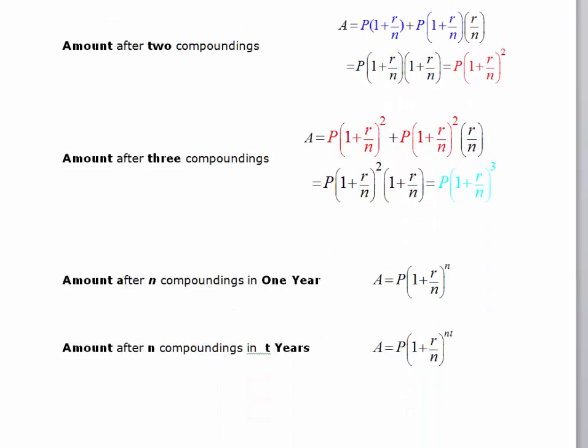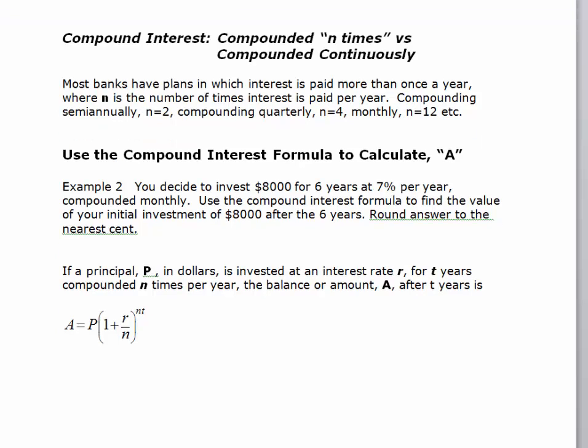We're going to skip over this for now, and just jump right into using the formula for compounded interest. And so it says here that most banks have plans in which interest is paid more than once a year, and N is the number of times interest is paid per year. So if you compounded semi-annually, N would equal 2. Compounding quarterly, N would equal 4. Monthly, N equals 12, etc. So we're going to use a compounded interest formula to calculate A, which is the amount after time.